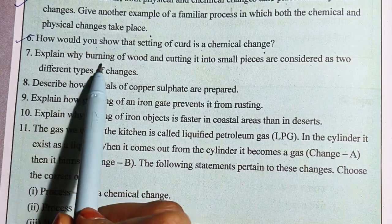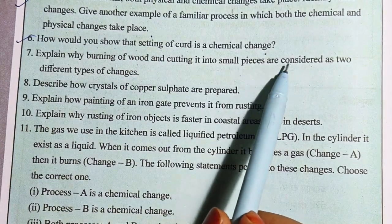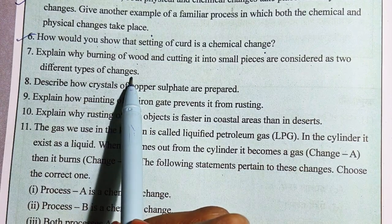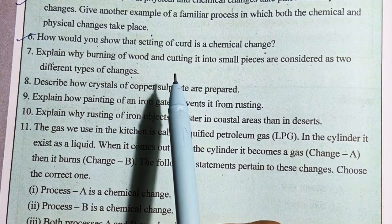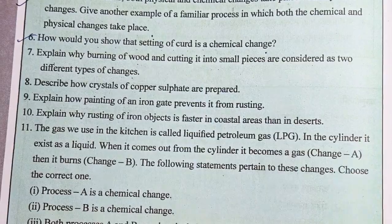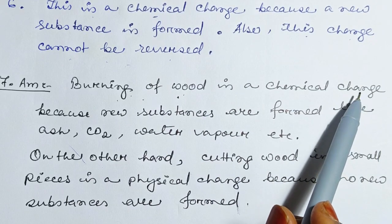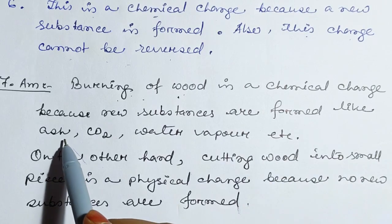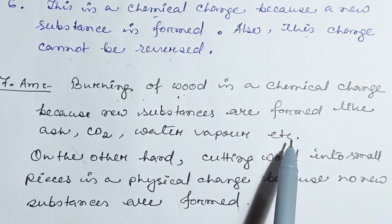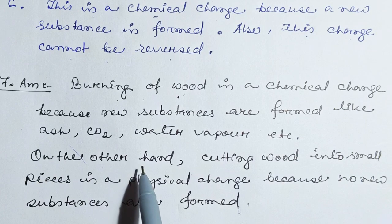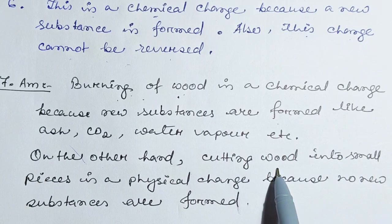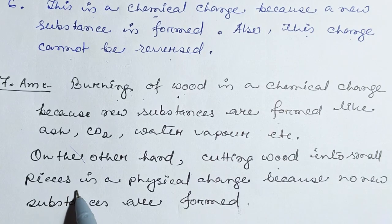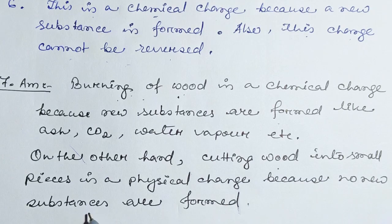Question number 7: Explain why burning of wood and cutting it into small pieces are considered as two different types of changes. Burning wood is a chemical change because new substances are formed — such as ash, carbon dioxide, and water vapor. On the other hand, cutting wood into small pieces is a physical change because no new substances are formed.